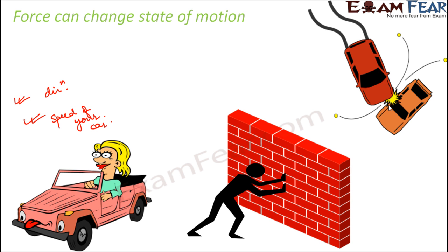Now there can be some examples where we know force is being applied but we do not evidently see a change in the state of motion. For example, suppose a person is trying really hard to make a wall move — he is applying force, but the wall is not moving. In this case, force is causing a change, but it is causing some change internally. The change is so nominal compared to the mass of the object, because the wall is extremely heavy and hard.